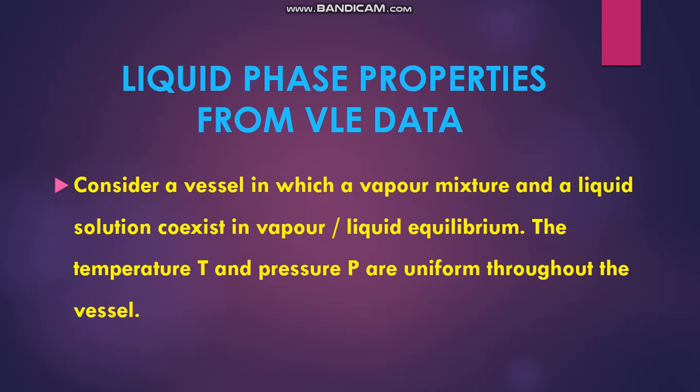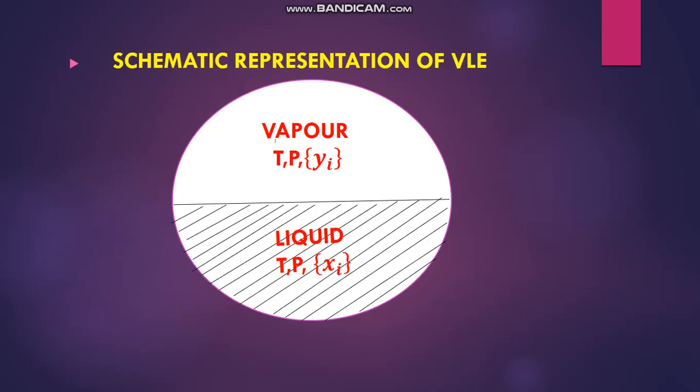VLE means vapor-liquid equilibrium. We consider a vessel in which a vapor mixture and a liquid solution co-exist in vapor-liquid equilibrium. The temperature T and pressure P are uniform throughout the vessel, as shown in the schematic representation of vapor-liquid equilibrium.